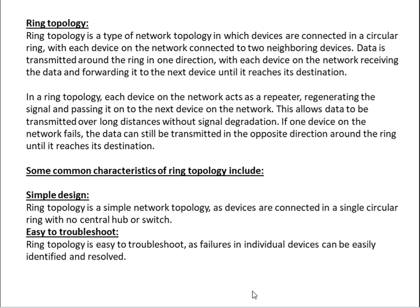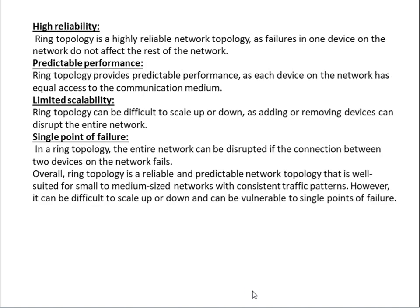Simple design: ring topology is a simple network topology as devices are connected in a single circular ring with no central hub or switch. Easy to troubleshoot: ring topology is easy to troubleshoot as failures in individual devices can be easily identified and resolved. High reliability: ring topology is a highly reliable network topology as failures in one device do not affect the rest of the network.